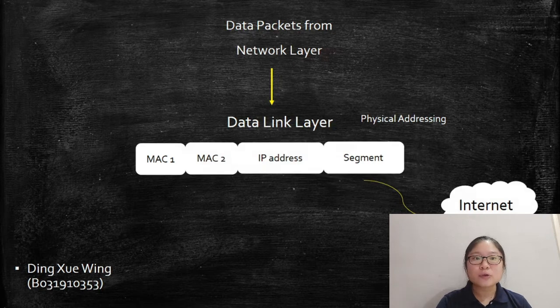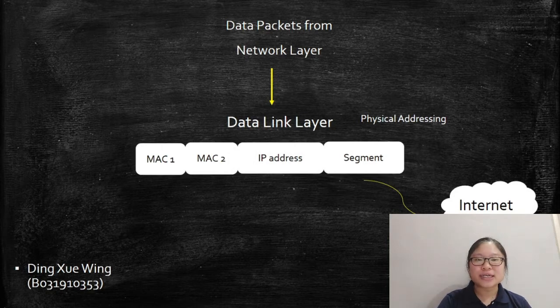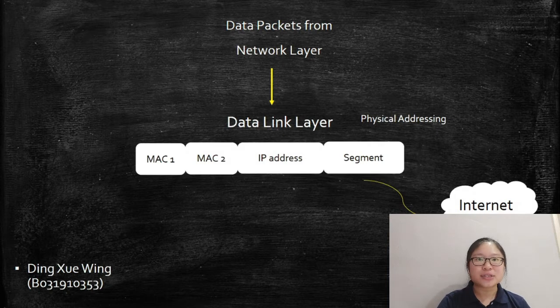It passes it down to layer 2, which is the data link layer. The data link layer adds the router physical address, which is MAC address, as the local destination address, and allows the router to send the packets up to the internet.